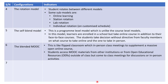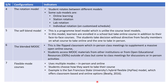Then the last one is the flexible mode courses. In flexible mode courses, you use multiple modes — in-person and online — and at the same time students choose how they want to take their course. An example is the San Francisco State University hybrid flexible model, where students determine whether to attend in-person or online.